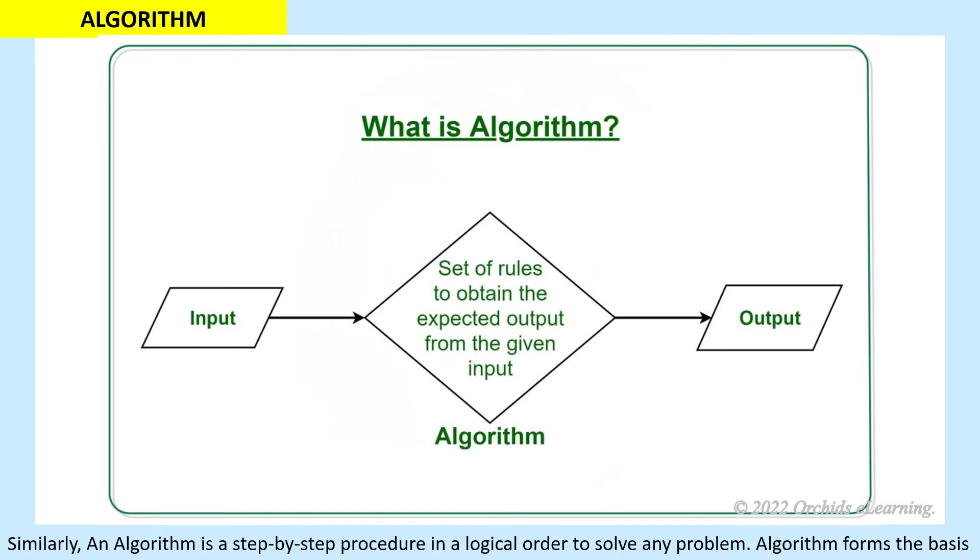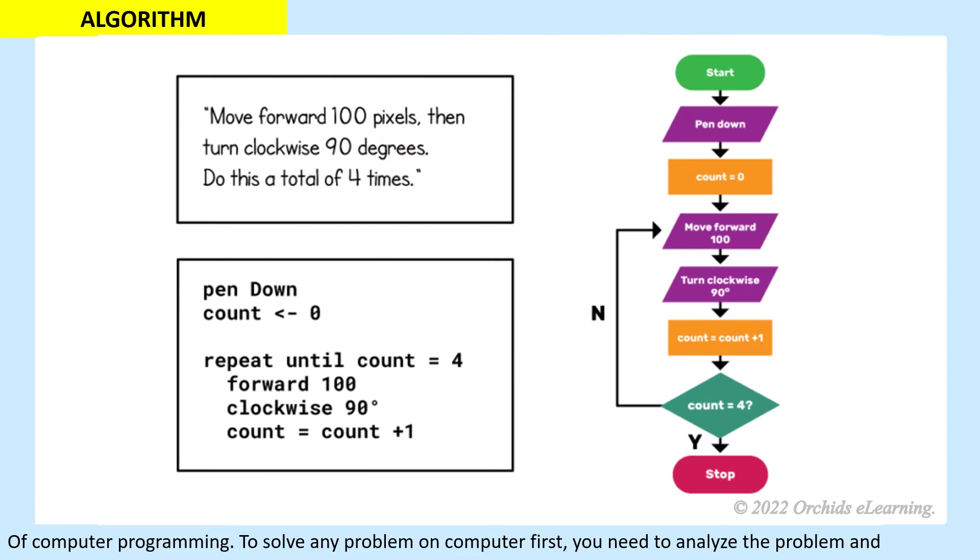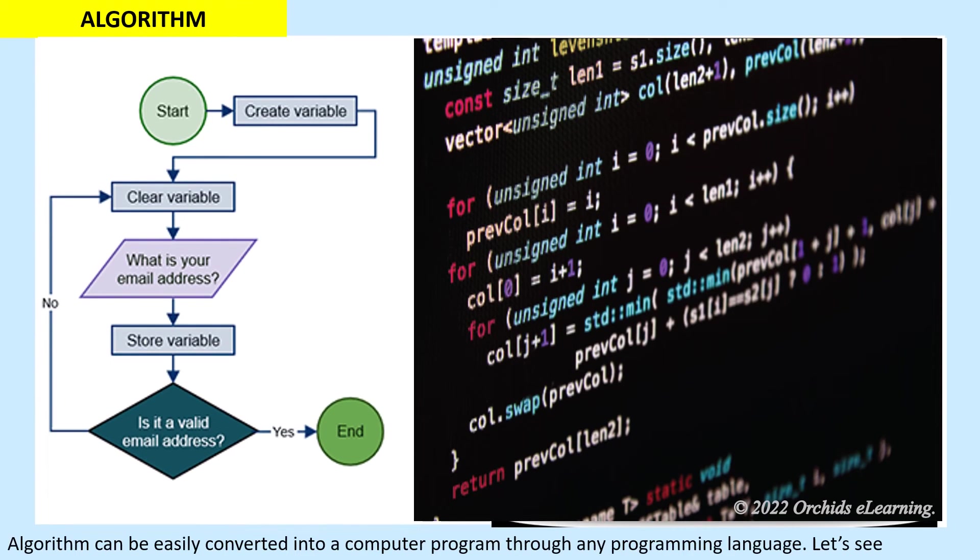Algorithm forms the basis of computer programming. To solve any problem on computer first, you need to analyze the problem and understand its nature. Then you prepare step-by-step methods to work on the input according to which output is prepared by the computer. Algorithm can be easily converted into a computer program through any programming language.